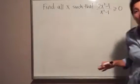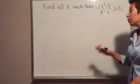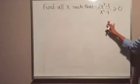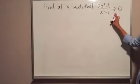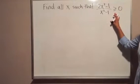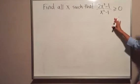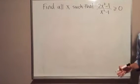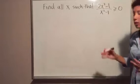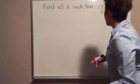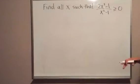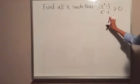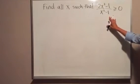Hello! Today we're going to solve a rational inequality. Here we have (2x² - 1) / (x² - 1) ≥ 0. We need to solve for the type of x on the real number line that solves this inequality.